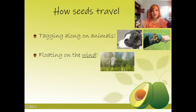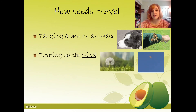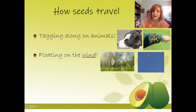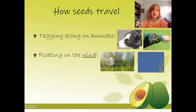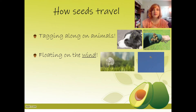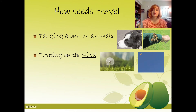Another way seeds travel is floating on the wind. You're familiar with this one with the dandelion — we blow them for fun, but technically we're helping them scatter away from the parent plant to make more dandelions. There are also helicopter seeds — they're actually maple tree seeds. They spin in a circle when you throw them and fly along the wind so that they can make a new maple tree somewhere else, because a maple tree is not going to sprout right underneath another maple tree.